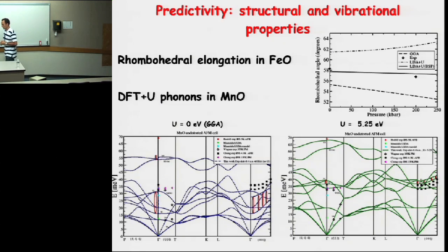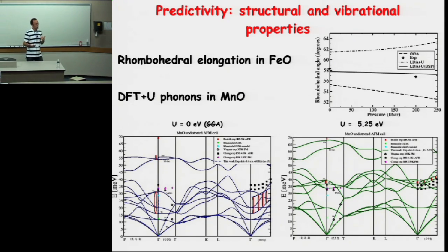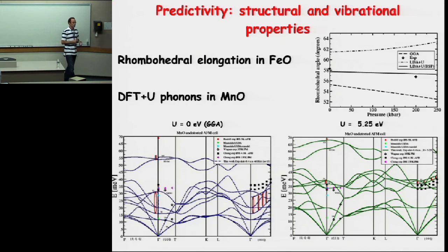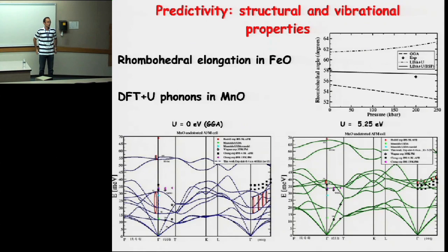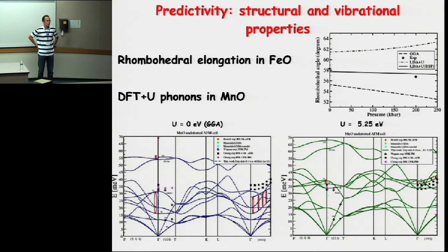Are you saying that when they're more similar, you would use the same U or different U? No — when they're more similar, you can afford using a more precise evaluation of U. So when they're more similar, you gain more by using a more precise value. So if you're doing a spin transition where maybe things are very similar, you might say that's a good time to really get U correct. I would say so. If you're changing valence state, maybe there it's less important.